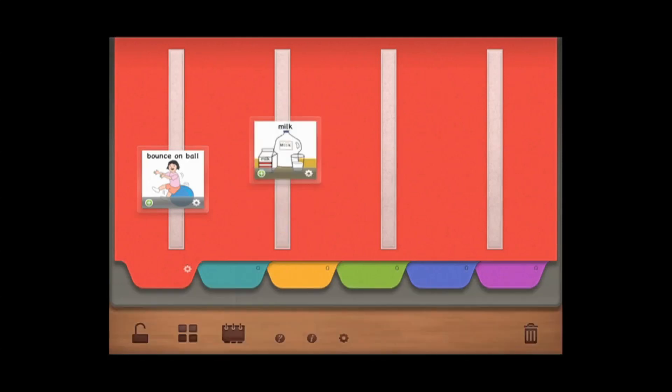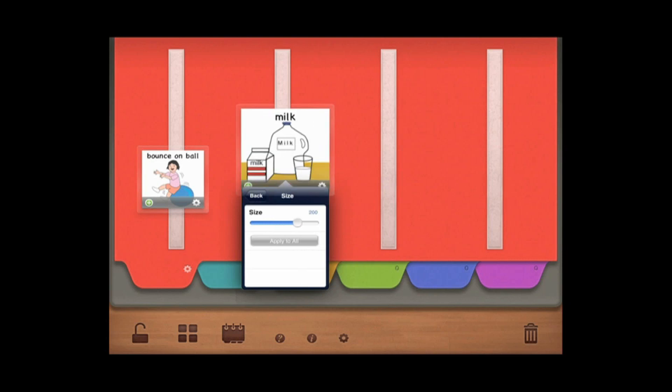Next, choose the properties for each image. To change the size of all the images on the page, select the Size slide bar to the size you want, then select Apply to All, and all of the pictures will be the same size.